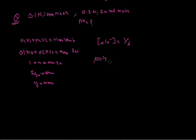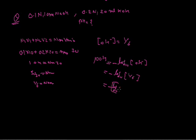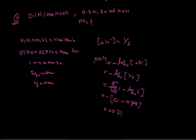Since the solution is basic, we first calculate pOH. The formula is pOH equals negative logarithm base 10 of concentration of OH minus, which equals negative log of 1 by 6. This gives log 1 minus log 6. Negative log of 1 is 0, and negative log of 6 is 0.74. So pOH equals 0.74.